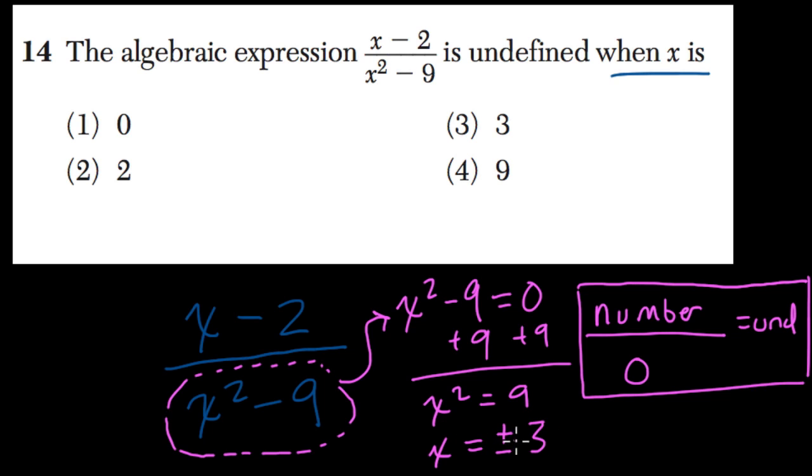Because negative 3 squared is positive 9, and positive 3 squared is 9. So x could be either value right there. They only give us 1 here. They give us 3.